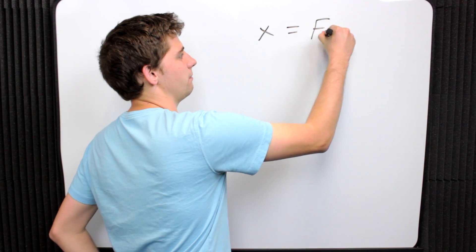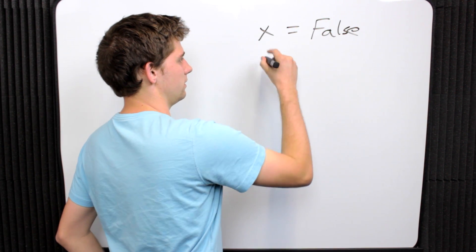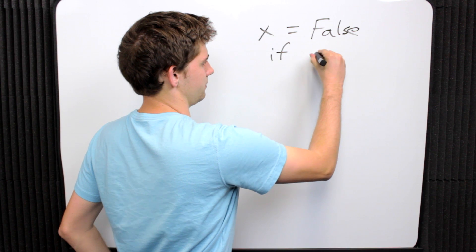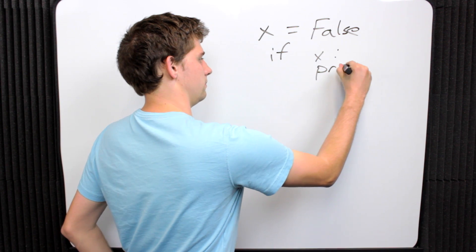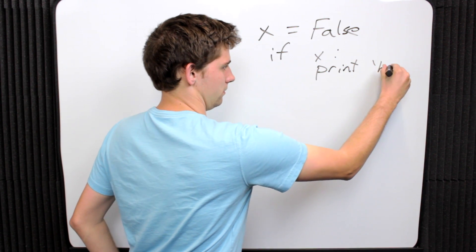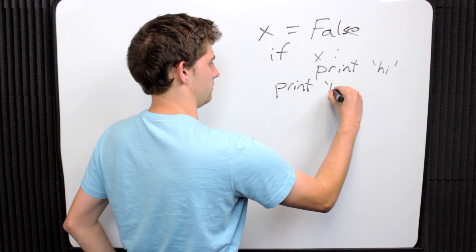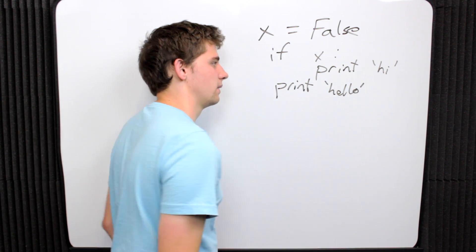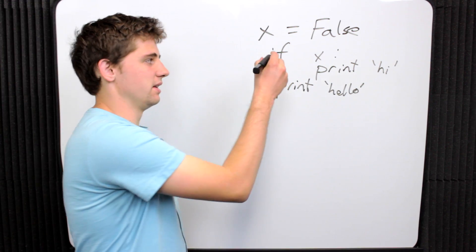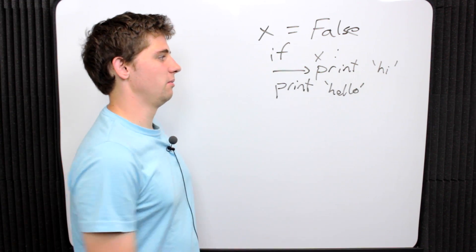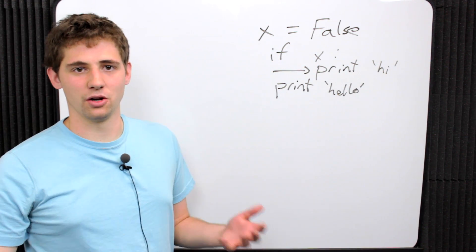Let's say x is some value. In this case, we see that the indentation puts the print 'high' statement within the code block.